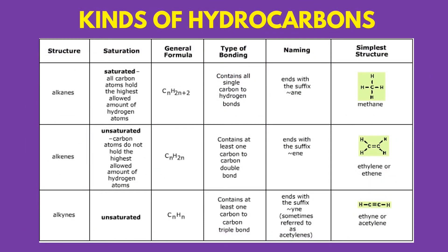This table shows the main differences between the three main types of hydrocarbons. Saturated hydrocarbons contain only carbon-to-carbon single bonds, while unsaturated hydrocarbons contain carbon-to-carbon double or triple bonds, wherein more hydrogens can be added. In the carbon-to-carbon double bond, two pairs of electrons are being shared, leaving the carbon free to bond to two other atoms. Examples of saturated hydrocarbons are alkanes, while alkenes and alkynes are both unsaturated, due to the presence of double and triple bonds.